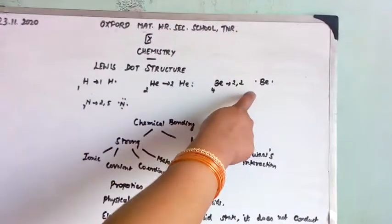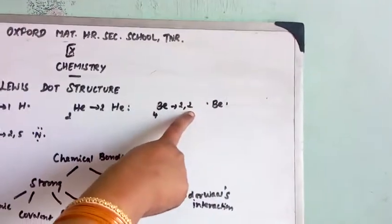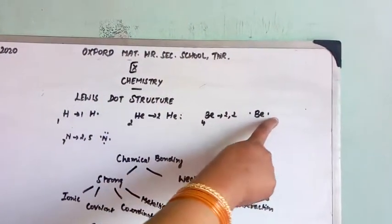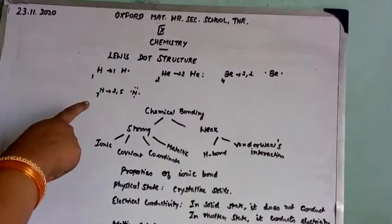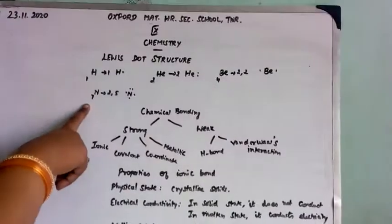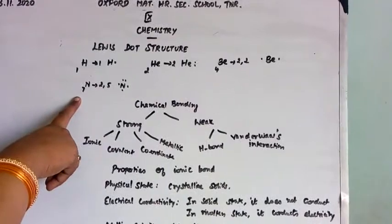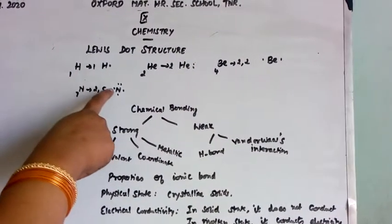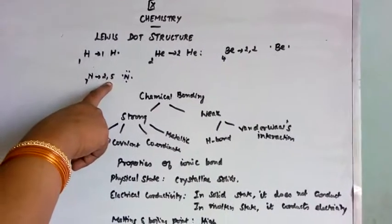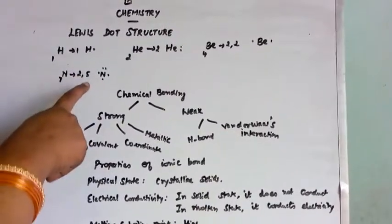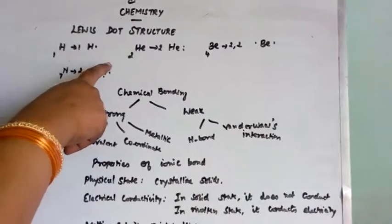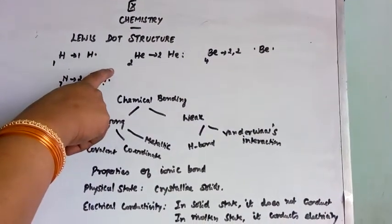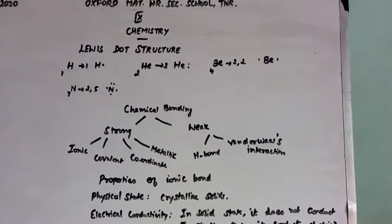Only these 2 electrons which are present in the valence will involve in bonding. For nitrogen, atomic number is 7. So what is the electron distribution? 2, 5. Only 5 electrons will involve in chemical bonding. All the sides should be occupied by 1 electron, then only another electron will be paired.